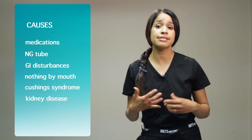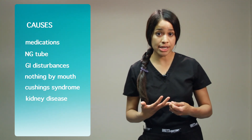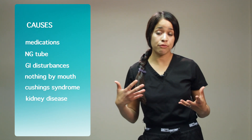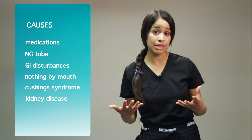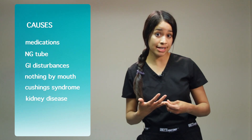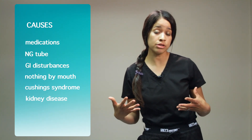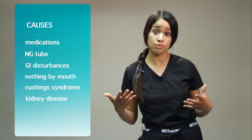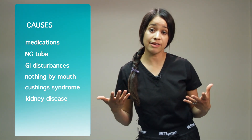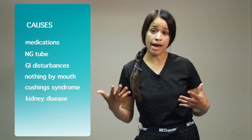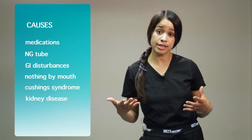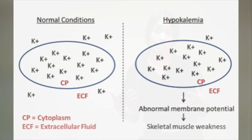Patients with severe vomiting and diarrhea are also at risk. In addition, patients who are NPO — nothing by mouth — or fasting can also have decreased levels. Cushing syndrome contributes to this as well, as it increases an excessive amount of aldosterone. Kidney disease also contributes, along with excessive potassium moving from extracellular into the intracellular space, alkalosis, and high levels of insulin.